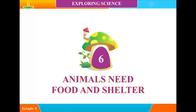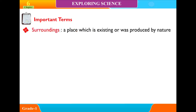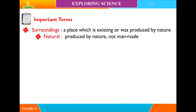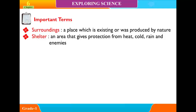Chapter 6: Animals Need Food and Shelter. Important Terms: Surroundings - a place which is existing or was produced by nature. Shelter - an area that gives protection from heat, cold, rain and enemies.